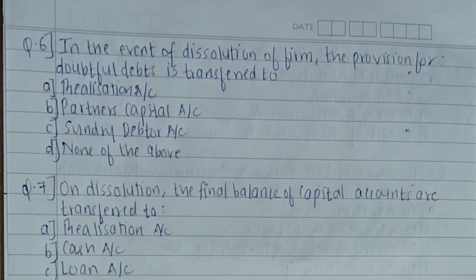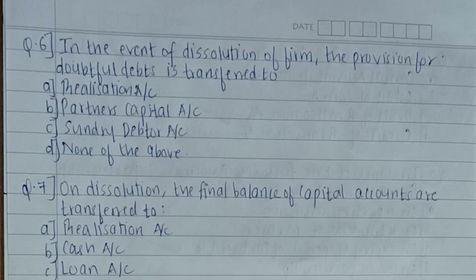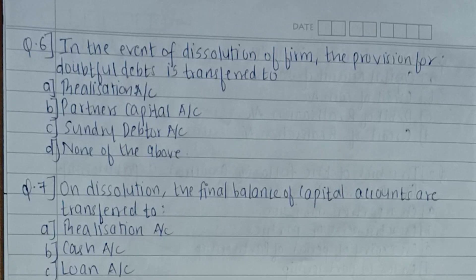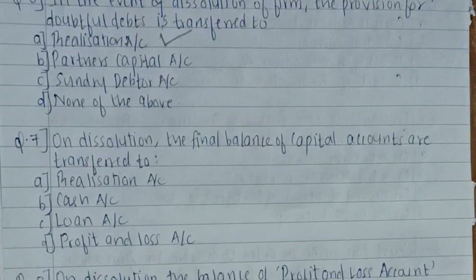Sixth question: in the event of dissolution of a firm, the provision for doubtful debts is transferred to — realization account, partner's capital account, sundry debtors account, or none of the above? Whenever a reserve for doubtful debt is given, we record it on the credit side — that is by sundry liabilities — under the realization account. Therefore the answer is A — realization account.